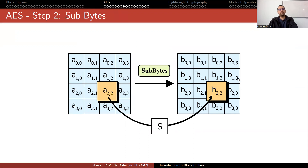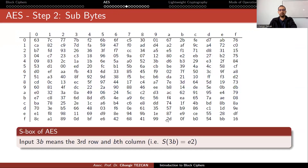For SubBytes, you take each byte, put it into the S-Box, and obtain the result. The S-Box is defined by a lookup table: for example, if your input is 3B in hexadecimal, you go to the third row and the B column and read the output value.